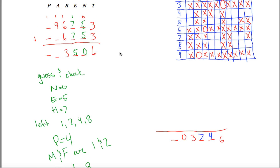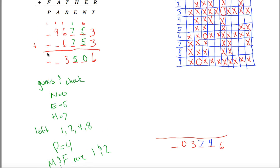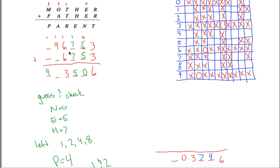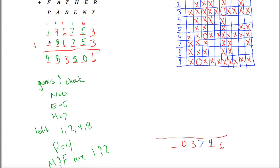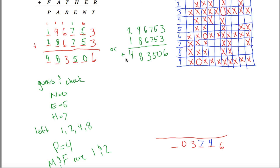I think I have a solution. Let's verify: 3 plus 3 is 6; 5 plus 5 is 10, write 0 and carry 1; 7 and 7 is 14 plus 1 more is 15, write 5 and carry 1; 6 and 6 is 12 plus 1 more is 13, write 3 and carry 1; 1 and 9 and 8 is 18, write 8 and carry 1; then 1 and 1 and 2 gives 4. So putting 1 here and 2 here gives 4, or I could put 2 here and 1 here to get 4 — those are my two solutions: 296753 plus 1967 53 equals 4835 06, giving two valid assignments for m and f.